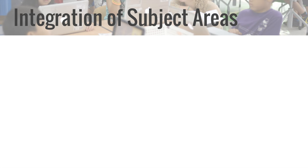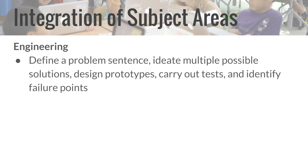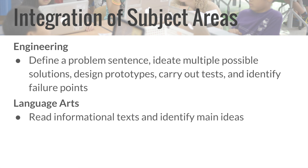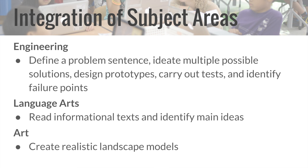In engineering, students used the design thinking process to define a problem sentence, ideate multiple possible solutions, design prototypes, carry out tests, and identify failure points of their solutions to processes that shape the earth. In language arts, students read informational texts on the topic of community and learned to identify main ideas. And finally, for art, students learned how to create realistic landscape models using different materials and tools.